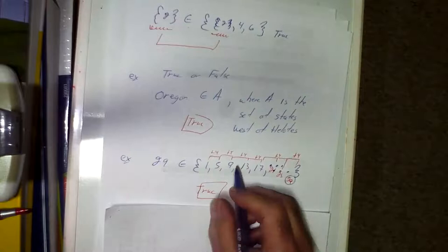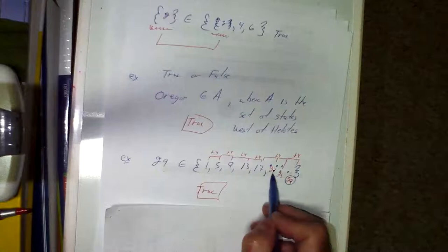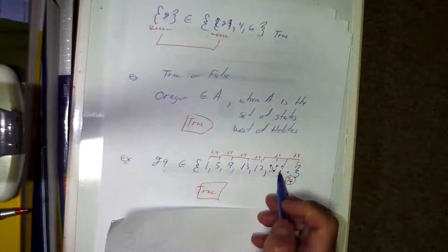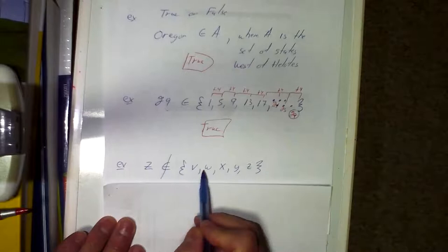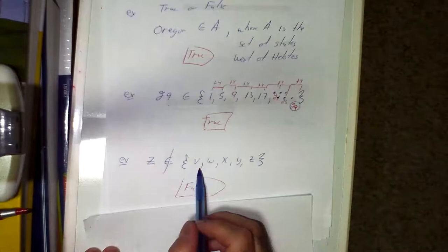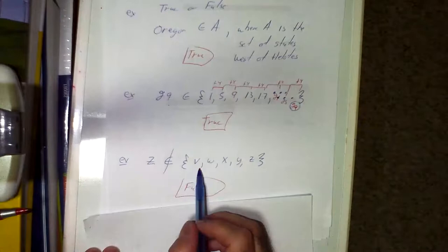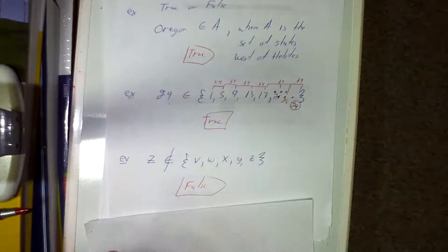Sometimes when you see dots you have to figure out the pattern to determine whether an element belongs in the set. True or false: is the letter Z NOT an element of {Z, W, X, Y, Z}? This is false — Z is an element of that set. The symbol with a line through the element sign means 'not an element,' so that statement is false.